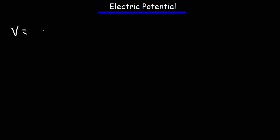Electric potential is defined as potential energy divided by charge. In some physics textbooks, you'll see capital U represented as potential energy.